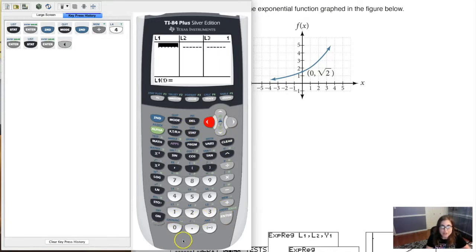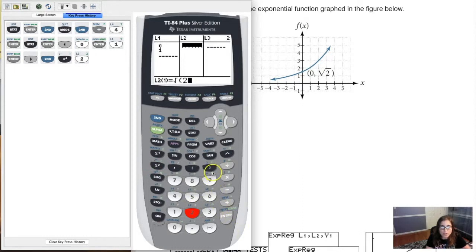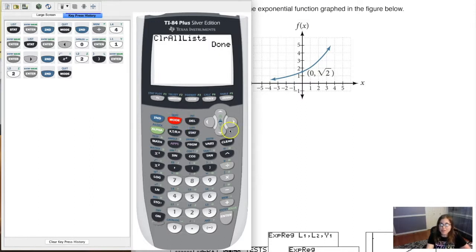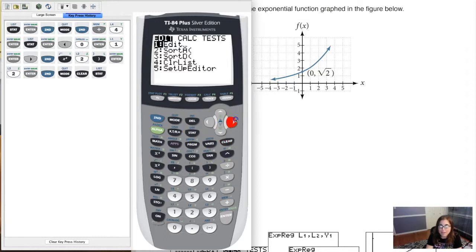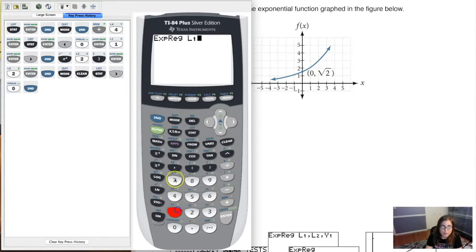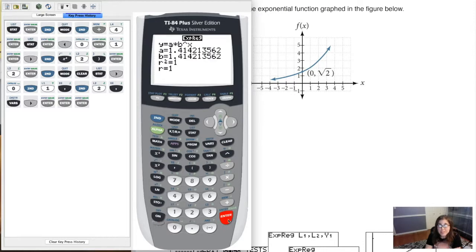Let's get our data in there. Our x values in this case were 0 and 1. And then our y values were the square root of 2 and 2. So with that, once I get my data entered, let me clear this out just so I don't mistakenly clear all my lists again. Once you get your data entered, it's STAT CALC 0, L1, comma L2, comma Y1. And there we go.